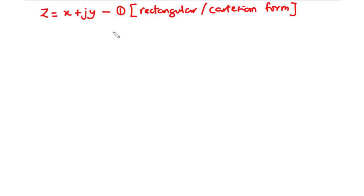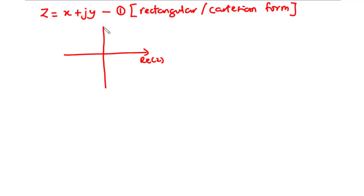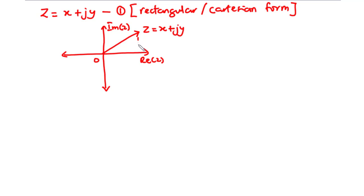We are going to represent this complex number on a graph, made possible by use of the Argand diagram. This diagram helps us represent a complex number in the Cartesian plane. On the Argand diagram we have the real axis and the imaginary axis, with O as the origin. The complex number z equals x plus jy is represented on the graph, with y on the imaginary axis, x on the real axis, r as the hypotenuse, and angle theta formed between r and x.